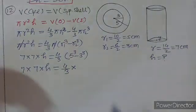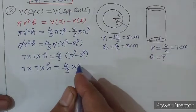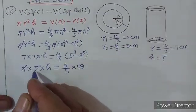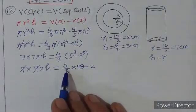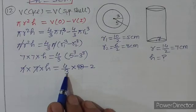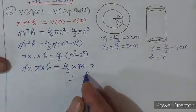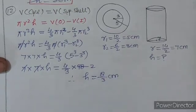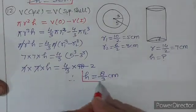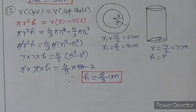5³ = 125, 3³ = 27, 125 − 27 = 98। 7 × 7 = 49, 49 × 2 = 98। 98h = (4 × 98)/3। h = 4/3 × (98/98) = 8/3 cm। Final answer: h = 8/3 cm। Question number 12 clear। बढ़ते हैं question number 13 की तरफ।